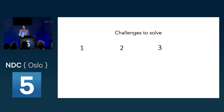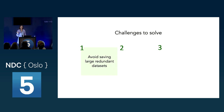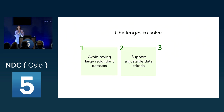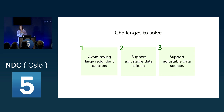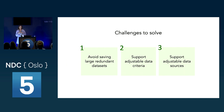We have three challenges to solve: avoid saving all this redundant data; support adjustable data criteria — not just the 5% buildings rule; and support adjustable data sources, since other types of data might also help detect buildings.